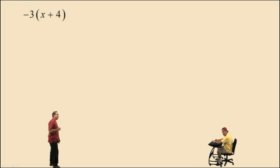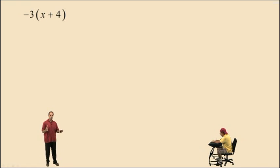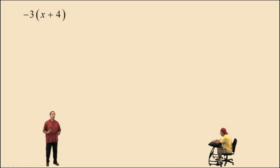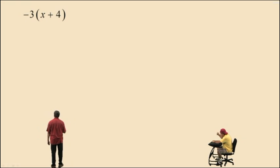We have negative 3 times the quantity x plus 4. Remember, the distributive property states that you can multiply across an addition or a subtraction. In other words, you can get rid of the parentheses, and that's what we need to do here. We have negative 3 times the quantity x plus 4 — let's apply the distributive property.